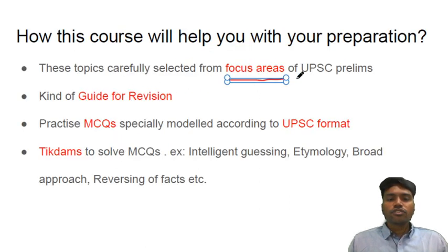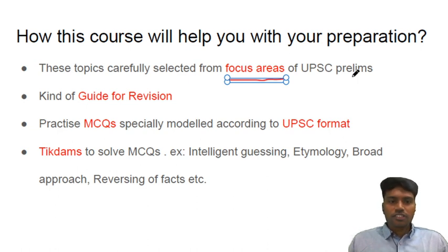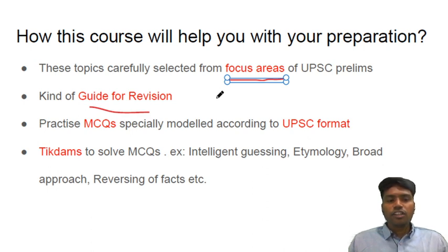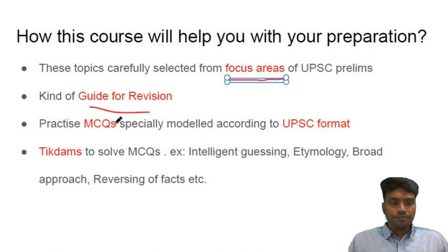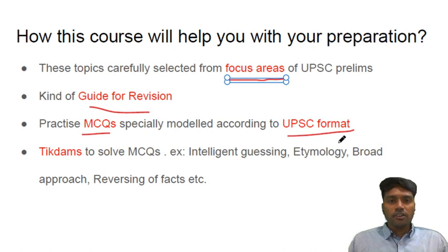We will bring you the most focused areas of UPSC Prelims. If you see the UPSC Prelims past papers, there are certain areas in which UPSC tends to ask questions — for example, any multilateral institution or new fields of science and technology. This course will provide a guide for your revision. For multilateral institutions, it will tell you exactly what to focus on — who are its members, are there any important conventions, how is the voting power, etc. Apart from that, we will be dealing with MCQs in the UPSC format.